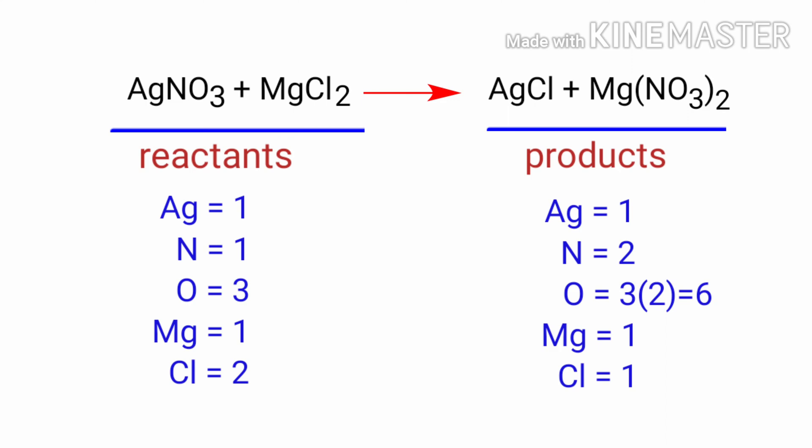The number of atoms are not balanced on both sides. To balance the chemical equation, we need to make use of coefficients. A coefficient is a number that we place in front of a chemical formula.